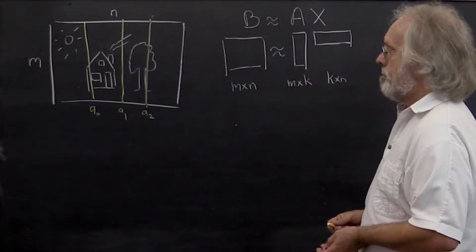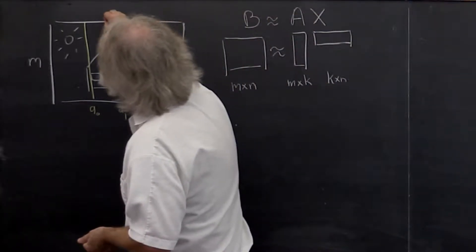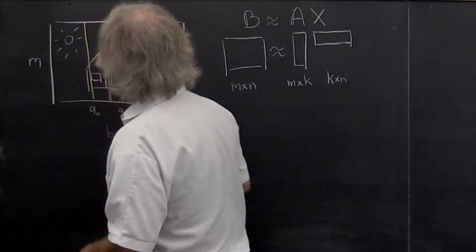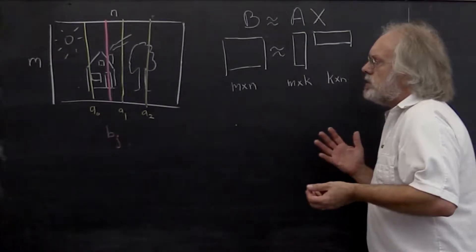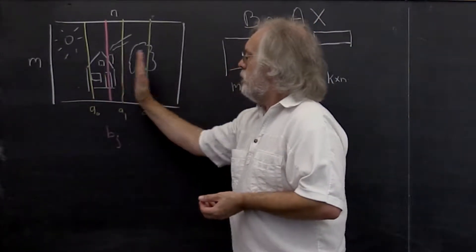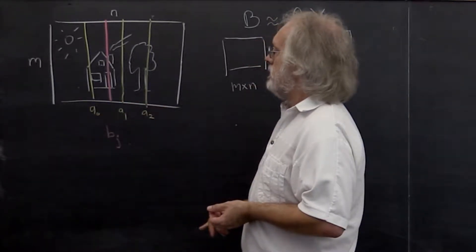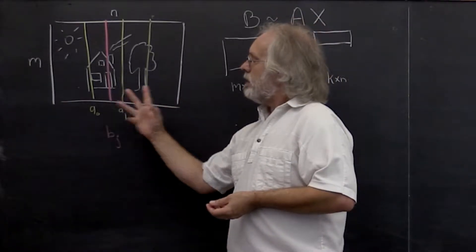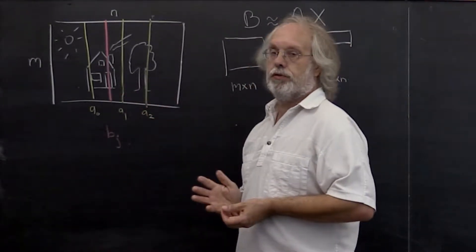And then if we take an arbitrary column in our original picture, let's call it Bj, we're going to say if the columns that we picked represent the picture, then maybe we can approximate this column Bj as a linear combination of the columns that we picked for A.